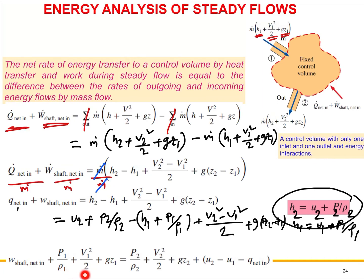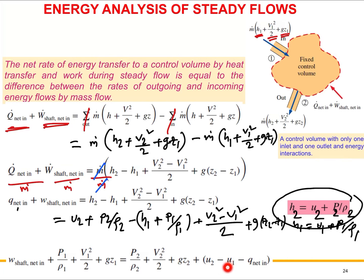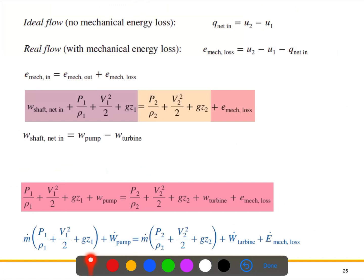Looking at the simplified expression, the left-hand side has four terms representing mechanical input energy. The first three terms on the right-hand side represent mechanical output energy. The remaining term involves u₂ − u₁. For ideal flow — meaning no irreversibilities — we neglect frictional effects. In that case, mechanical energy input equals mechanical output, energy is conserved, and the internal energy term becomes zero.